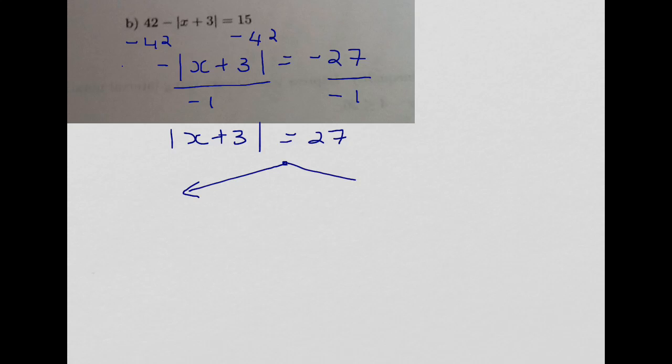into 2 equations. Remember for the first one you just drop the absolute value, so x plus 3 equals 27, and for the second one, everything inside the absolute value becomes the opposite. And in between, we put the word OR.